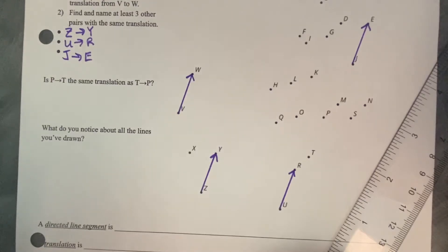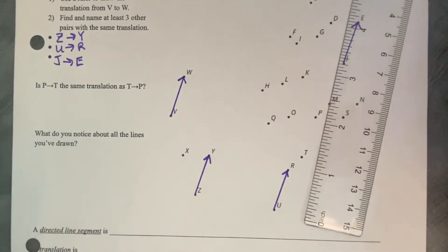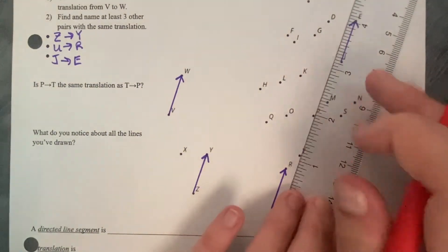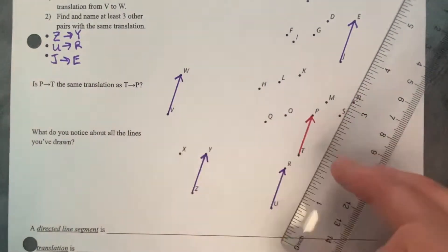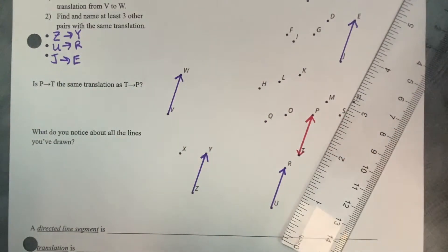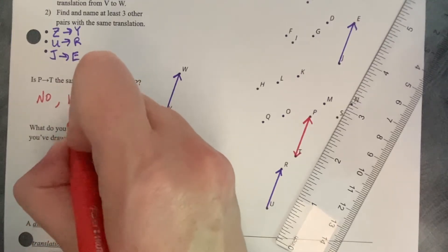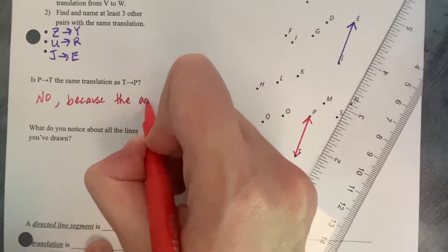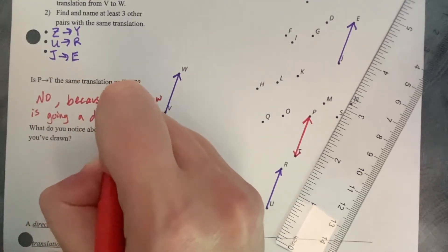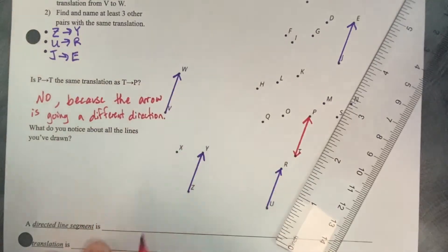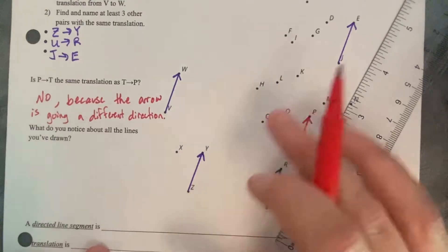Now it asks: is P to T the same translation as T to P? Let's find that. T to P goes in this direction — it goes up from bottom to top. But going from P to T would go the opposite direction. So is it the same translation? The answer is no — they're not the same translation. It matters what direction the points are sliding.